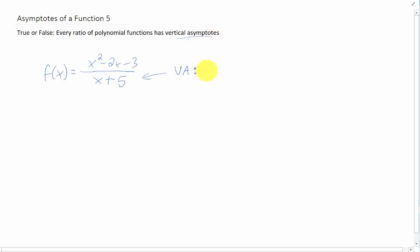In this example, a vertical asymptote occurs when x equals negative 5. That's when the denominator would be zero and the numerator is not zero at the same time. But there are a couple of cases where a ratio of polynomial functions does not give you a vertical asymptote.